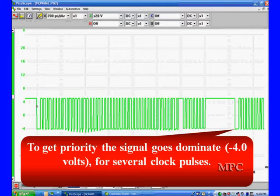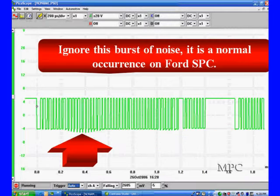If you look back on the far left, we have a similar pattern. Every time a module wants to take control of the bus, it goes dominant. A couple of clock cycles are alerting all others to be quiet. If this fails, we go to having communications problems.